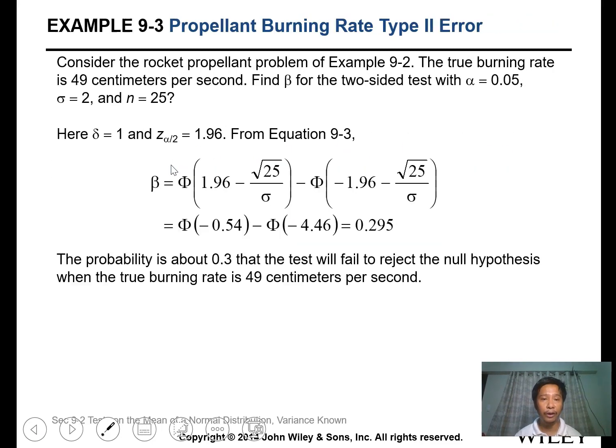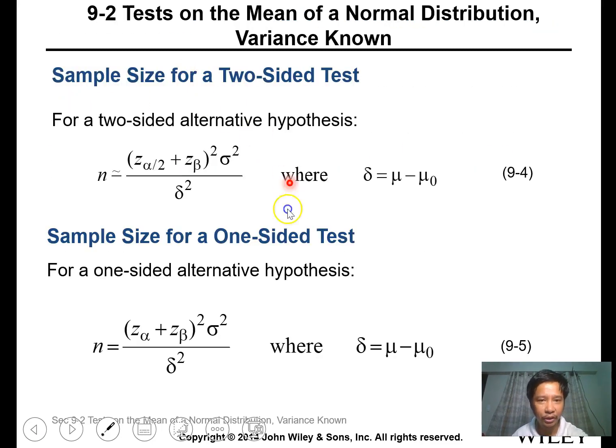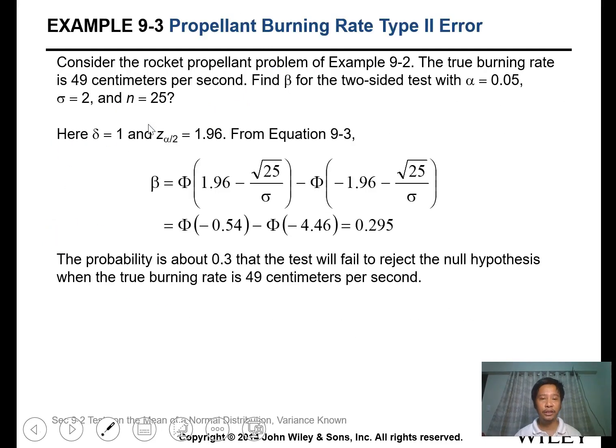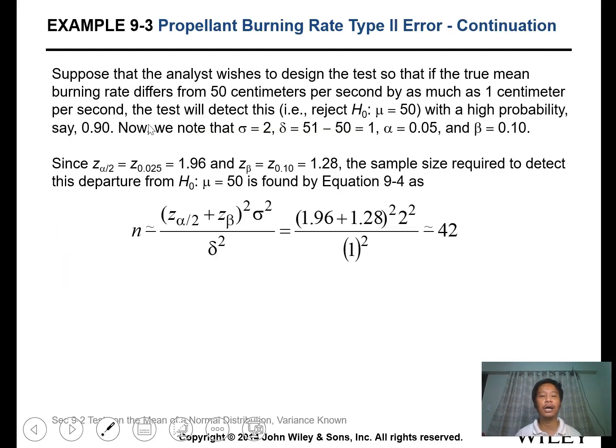For the next problem, we want to calculate the number of samples needed to increase the power of the statistics to 0.90, meaning our beta should be 0.1. In the rejection of the hypothesis with the same data, using the formula for two-sided test, we calculate your n value.